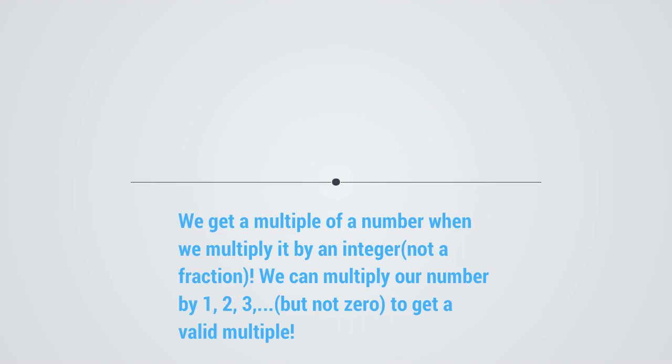We get a multiple of a number when we multiply it by an integer. An integer is simply a number that's not a fraction. We can multiply our number by 1, 2, 3, all the counting numbers, but not zero, to get a valid multiple.